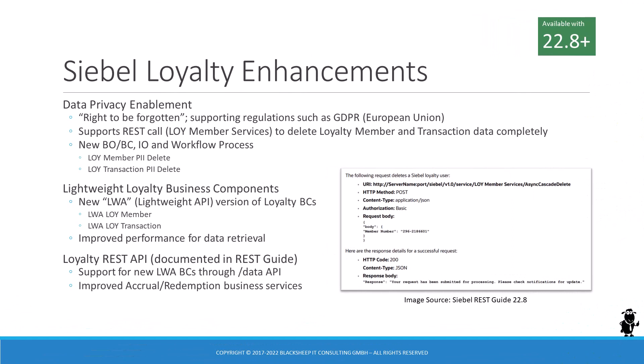The right to be forgotten made the news a few years back when authorities and governments started to implement regulations to protect the privacy of individuals. The General Data Protection Regulation, GDPR, applicable to member states of the European Union, is an example of such regulations. A large percentage of consumers are members of loyalty programs, giving up some of their privacy and personal data in exchange for hotel room upgrades or bonus points. When a company uses the Siebel CRM loyalty application, an individual customer's membership data along with all transactions is stored in various tables across the Siebel database. With Siebel CRM 22.8, Oracle introduces enhancements to Siebel Loyalty that make it easier for organizations to adhere to these regulations. For example, a new REST API allows for cascading deletion of all data related to a loyalty program member.